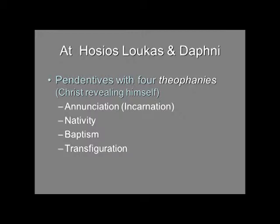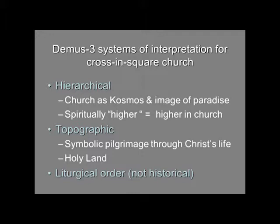In the pendentives, you might sometimes see angels, who are spiritual beings high on the hierarchy of being. But what we're going to look at are pendentives that show the four Theophanies — Christ revealing himself as God. You'll find these four Theophanies in our two example churches, Hosios Loukas and the Church at Daphne, which is the Church of the Dormition of the Virgin. The four Theophanies are: the Annunciation (the moment of the Incarnation, when Christ takes on human flesh); the Nativity of Christ; the Baptism of Christ; and the Transfiguration, when Christ appears between the two great prophets Moses and Elijah.